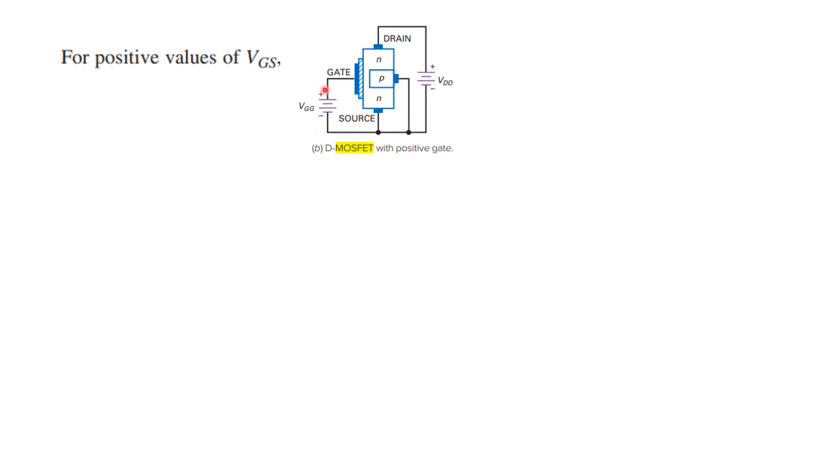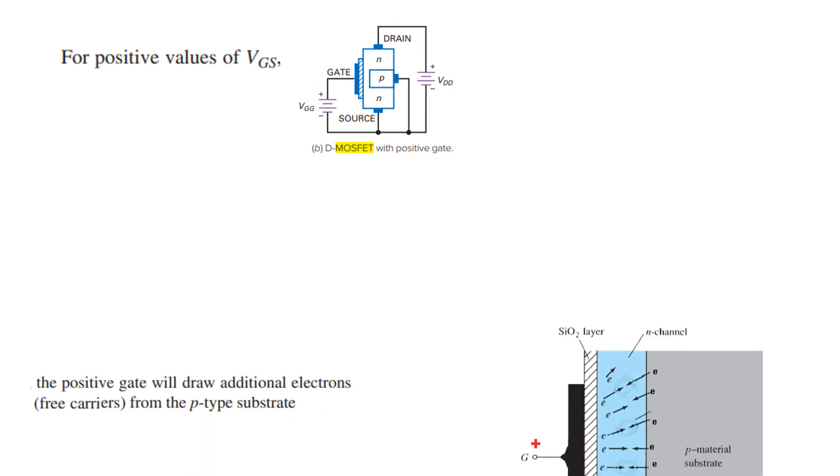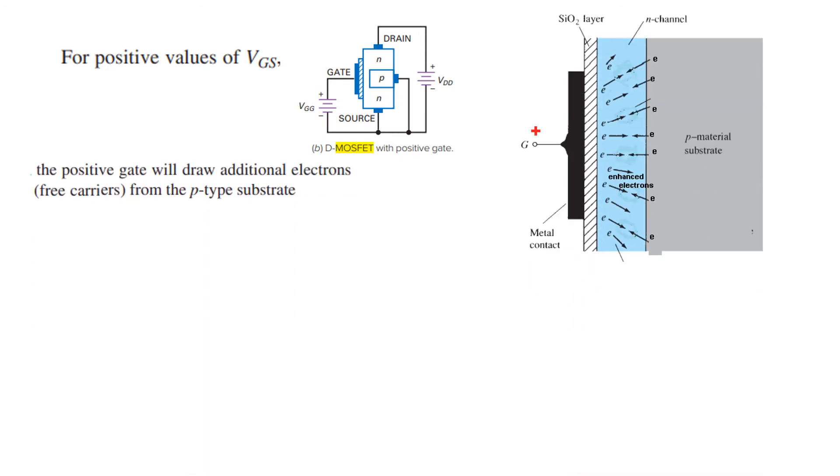Now if you apply a positive voltage then what will happen? Now for the positive voltage the electrons will remain there or will try to come closer to this side because of the positive charge, but because of the insulating layer they will not get in contact. But in addition to that, the electrons present in the P-type material will also get into the channel or get attracted by this positive charge and that means the number of electrons in the channel will increase.